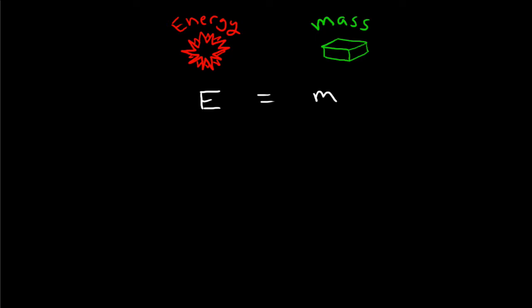Einstein spelled out their exact relationship with his celebrated equation E equals MC squared, where the letter C stands for the speed of light. Mathematically, the C squared is a constant that tells us how exactly energy and matter are related.